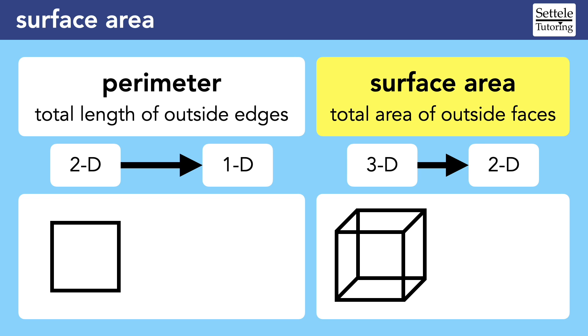To find the perimeter, we need to identify all of the outside edges. In this case, we can clearly see that the square has four sides.